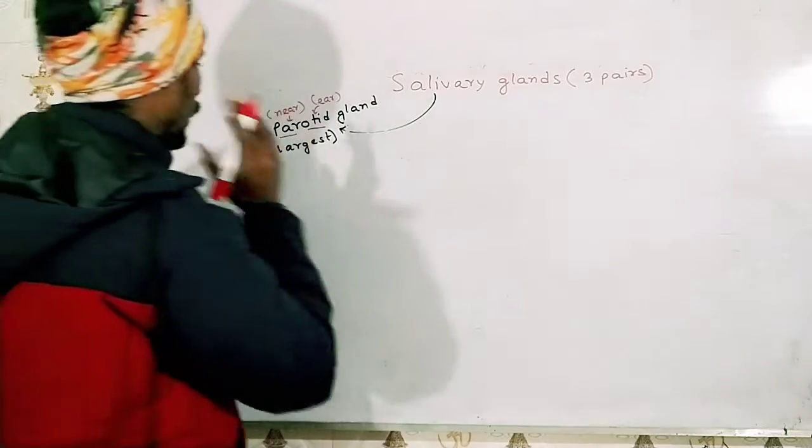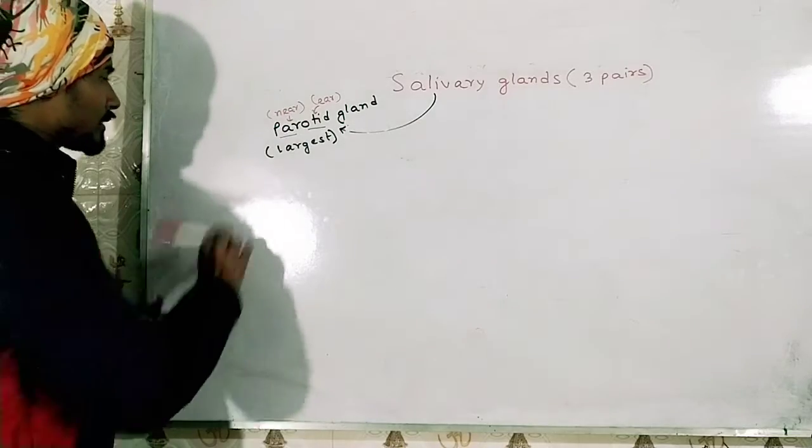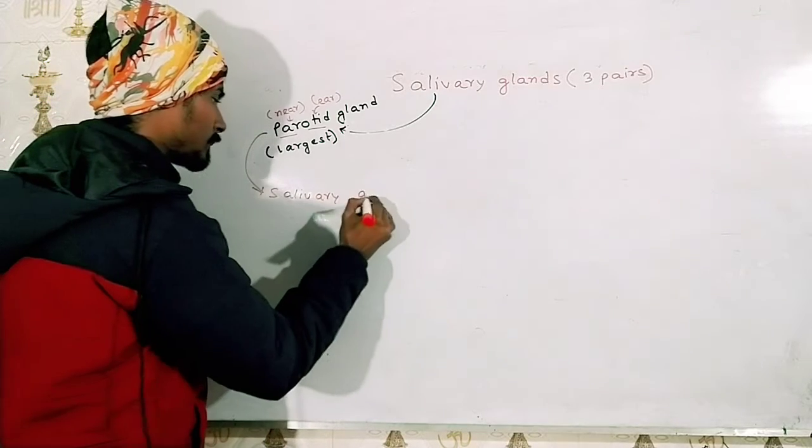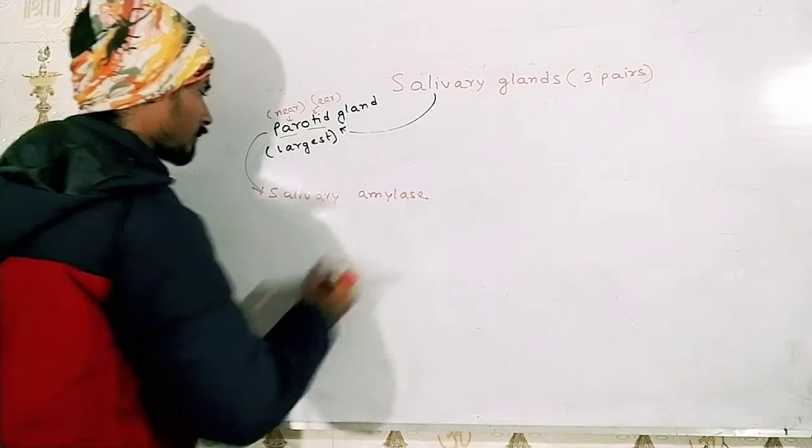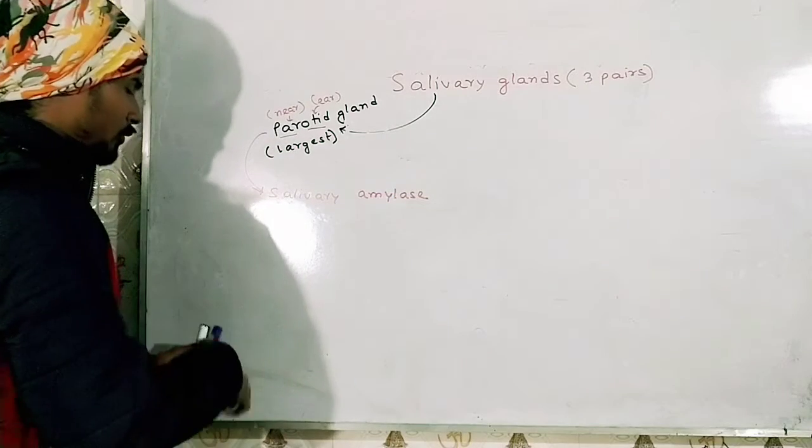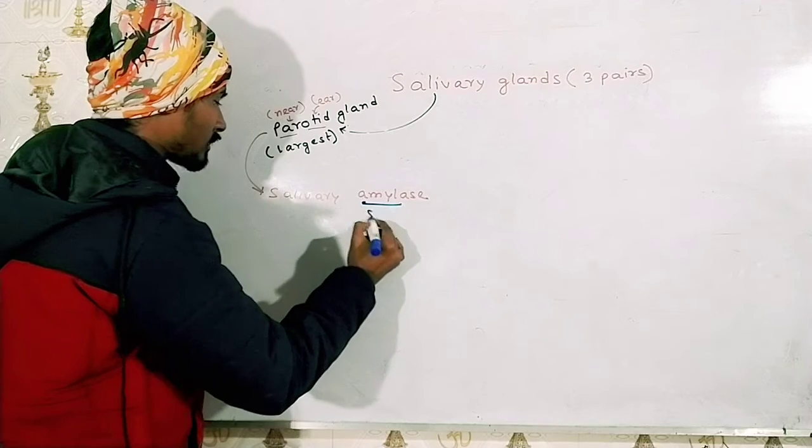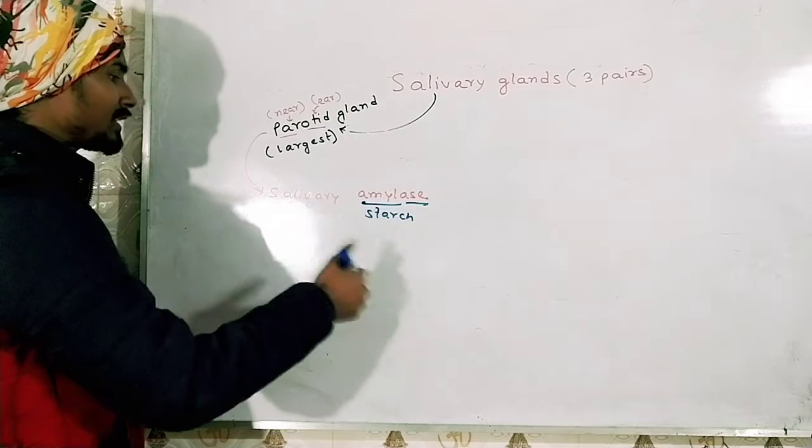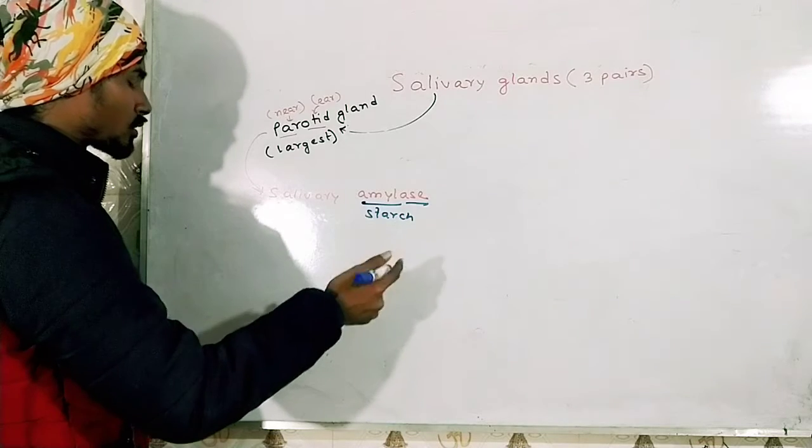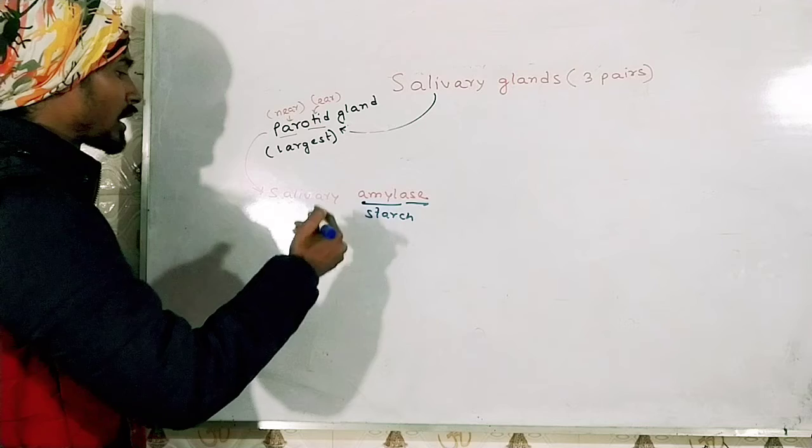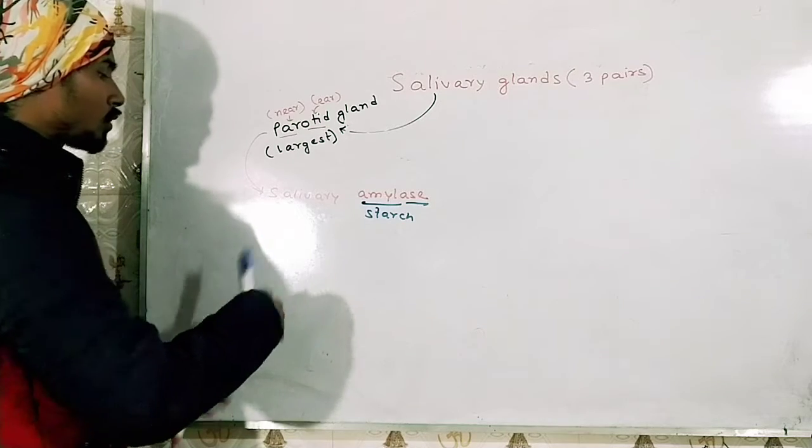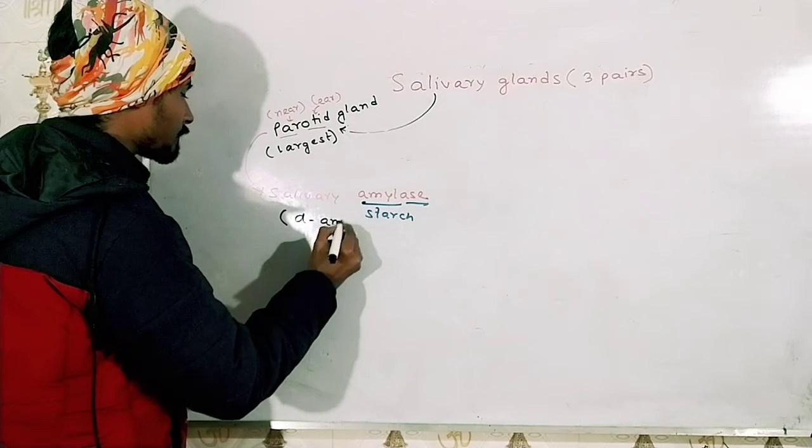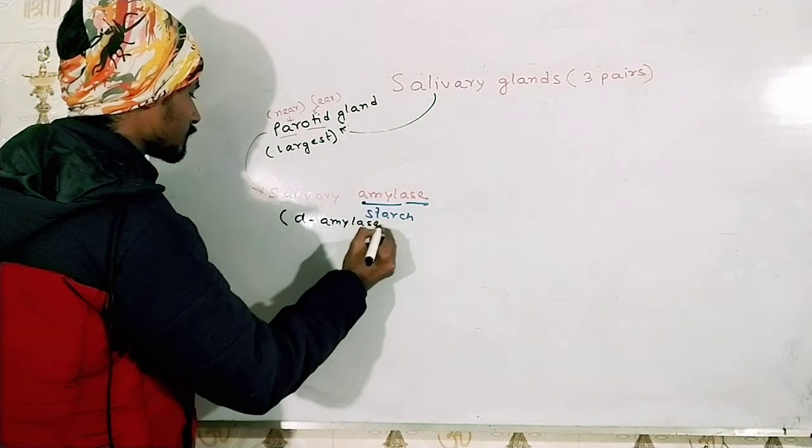The parotid glands secrete salivary amylase. Now if you just look at this term, you will get amylon, that is starch, and ase means enzyme. So it is breaking down starch into maltose, and that's why this enzyme is named as amylase. Now this enzyme is also named as alpha amylase or ptyalin.